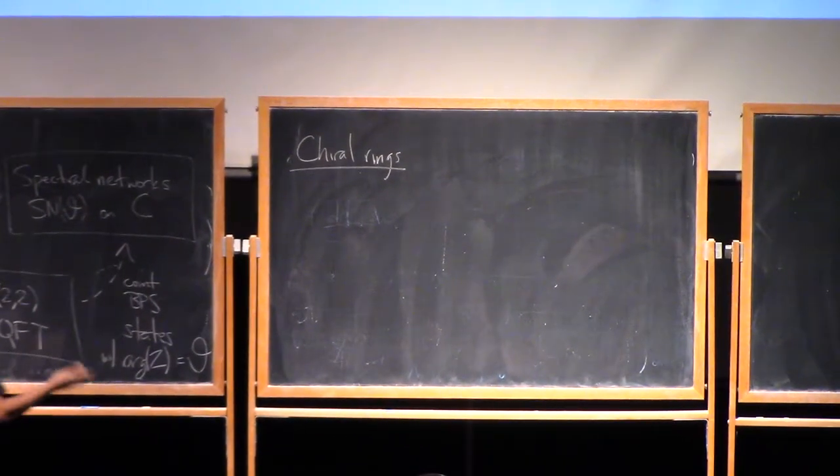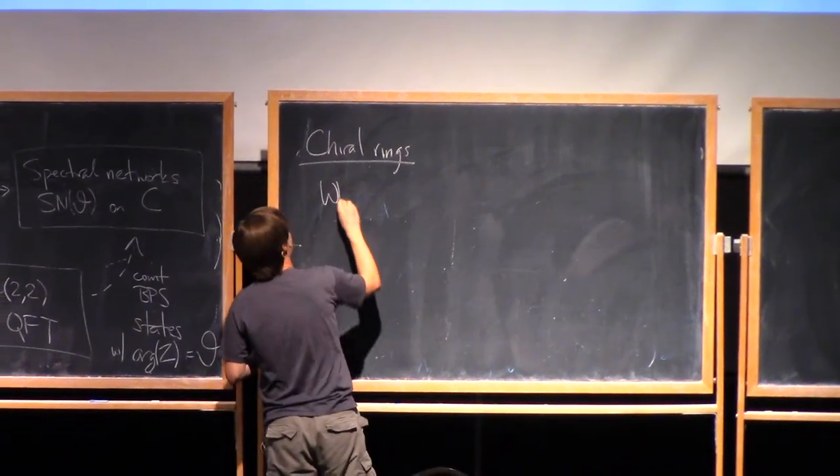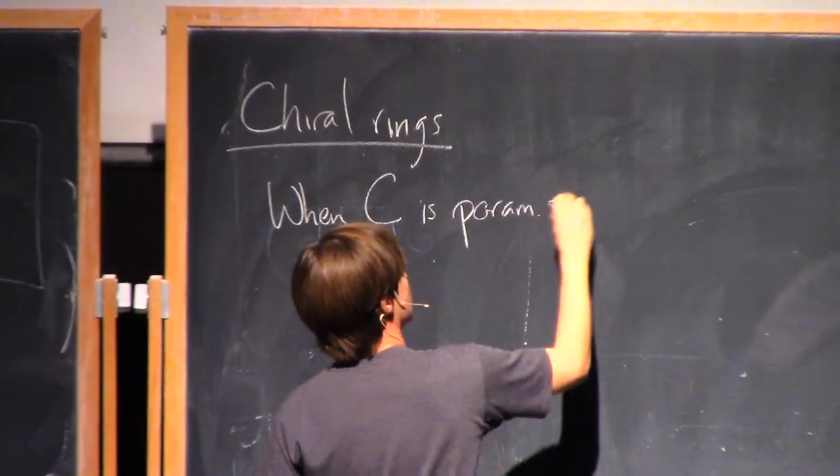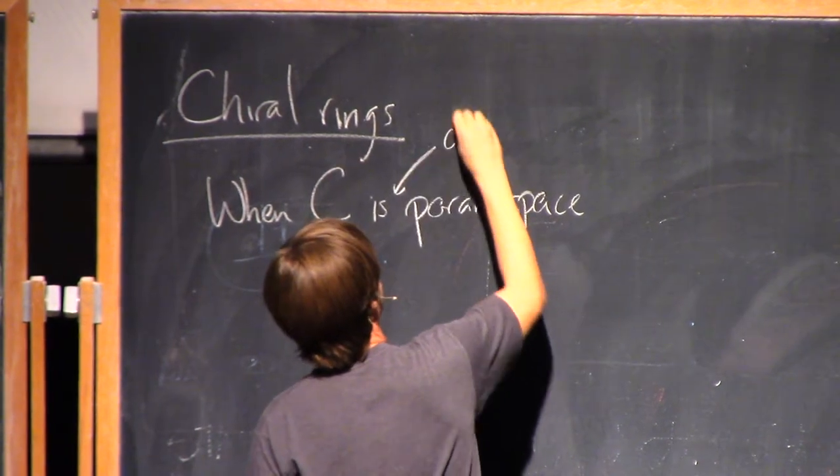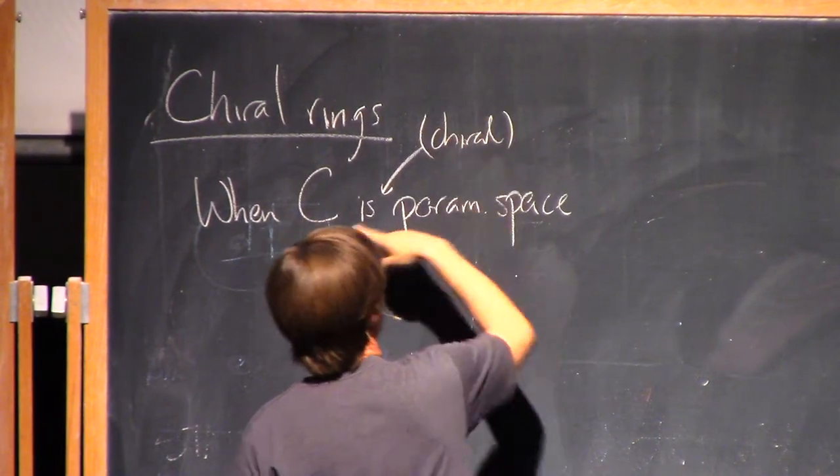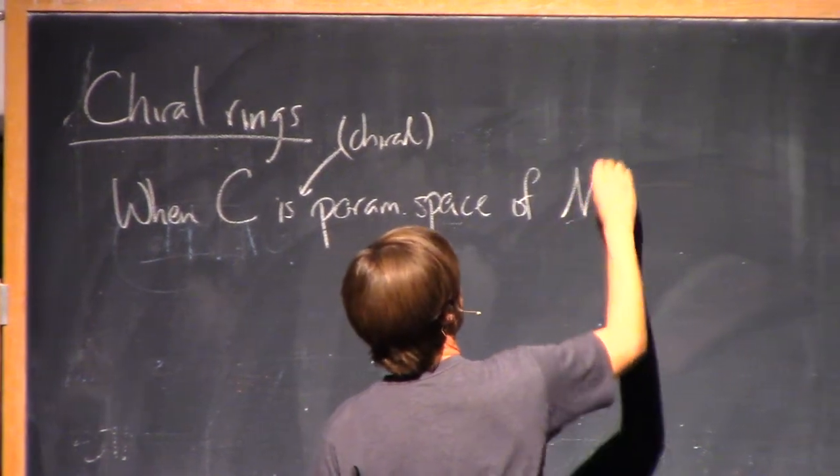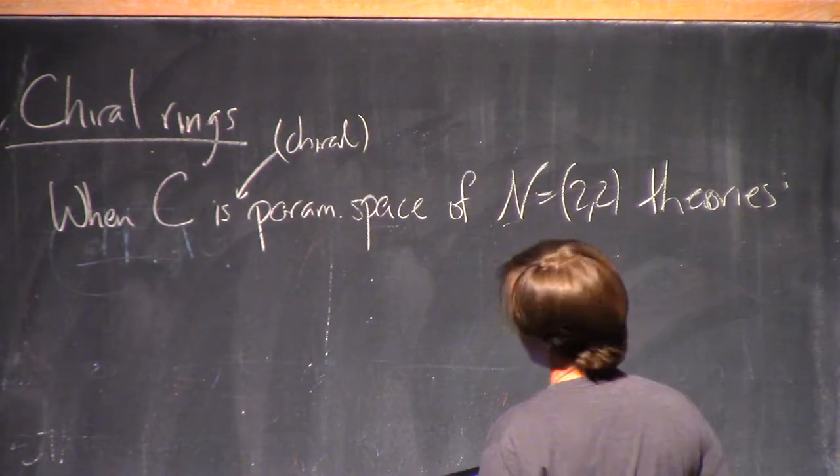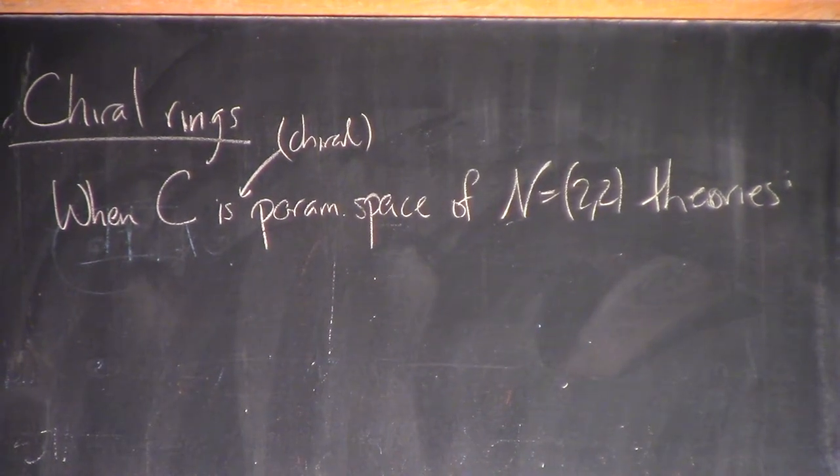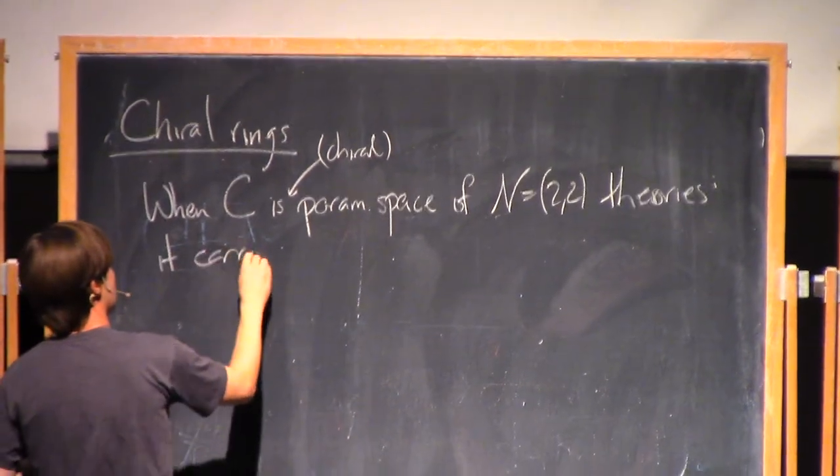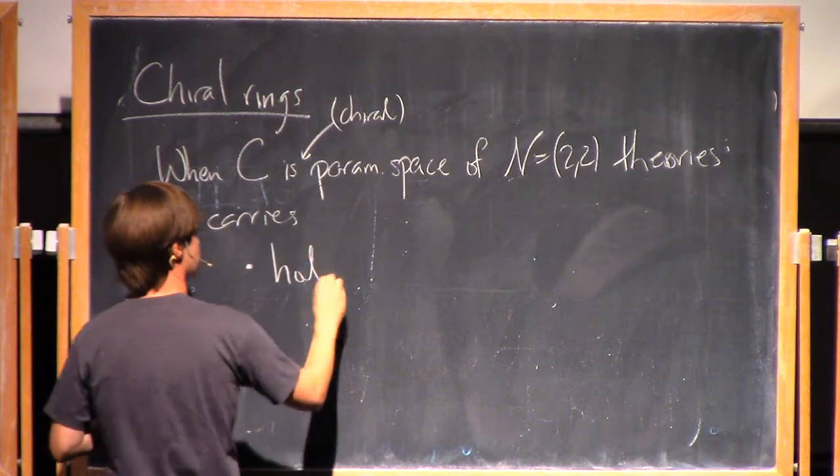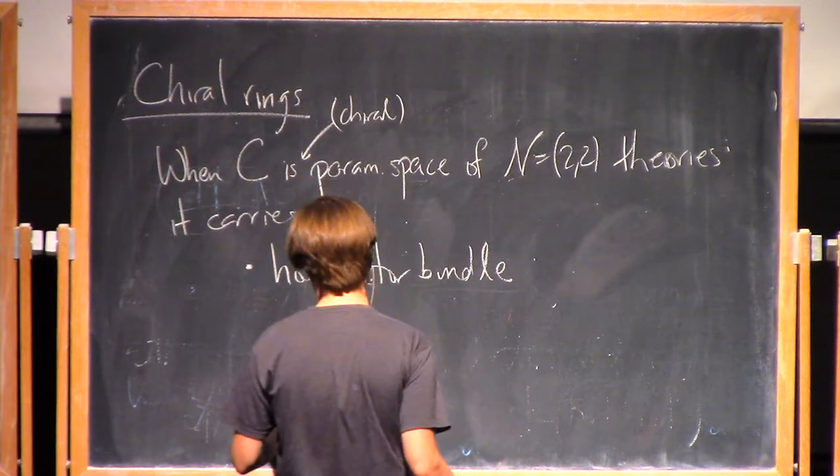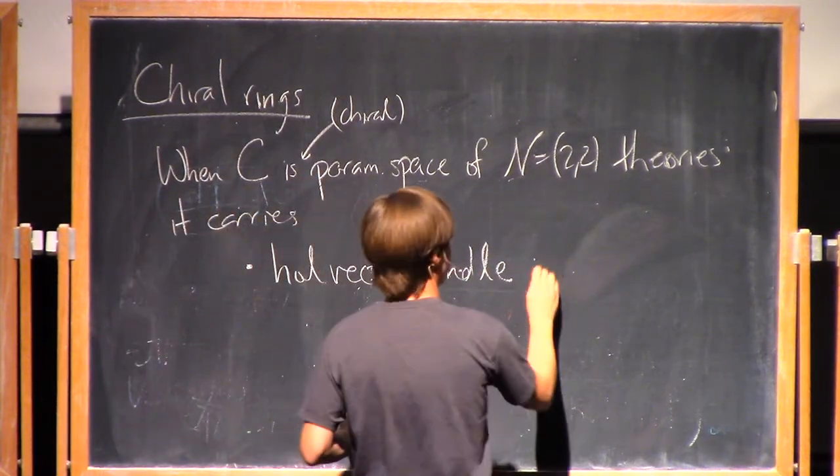So again, it'll just be some concrete mathematical construction, but let me put it in the sort of broader context. So if you have a space C, which is the parameter space, really I should say the chiral parameter space. Anyway, some kind of parameter space of the quantum field theory. Parameter space of N equals 2,2 theories. So these Cs are examples of that. It carries a holomorphic vector bundle. It's a complex manifold, so we could talk about a holomorphic vector bundle, and it carries a holomorphic vector bundle. And not only a holomorphic vector bundle, but it's a holomorphic vector bundle of commutative algebras.